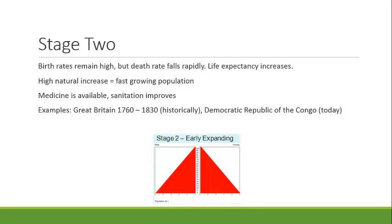The increase in life expectancy is mostly due to the decrease in child mortality and fewer deaths from childbirth. Maximum lifespan might see a small increase, but most of the life expectancy increase is because fewer people are dying such an early death — dying before they turn five years old. Historically, Great Britain went through this stage between about 1760 and 1830, and a country like the Democratic Republic of the Congo is in stage two today.